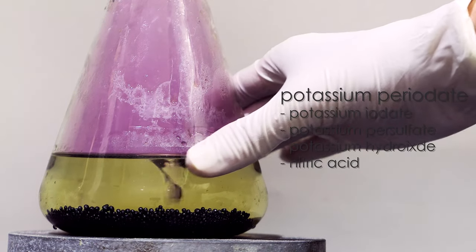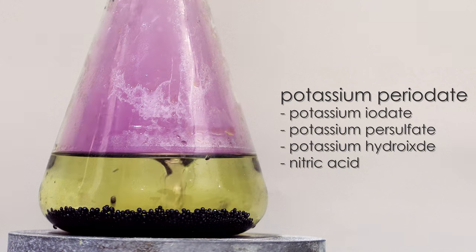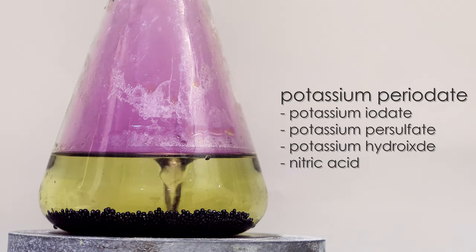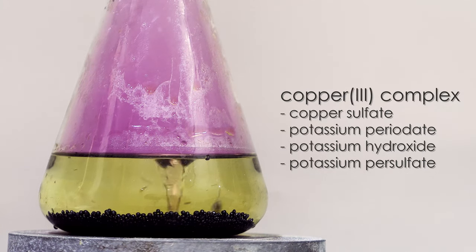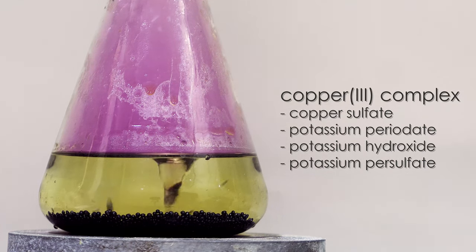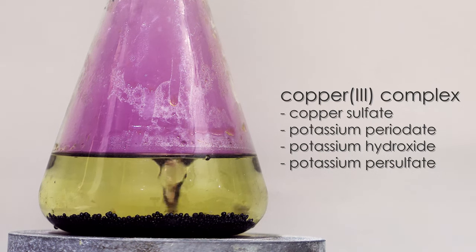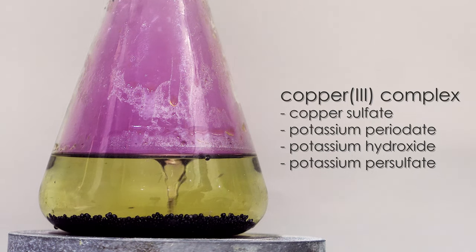Then for periodate, we have potassium iodate, which is made from the last step, potassium hydroxide, and potassium persulfate. Then for the final copper(III) complex, there are potassium periodate, potassium hydroxide, potassium persulfate, and copper sulfate pentahydrate.